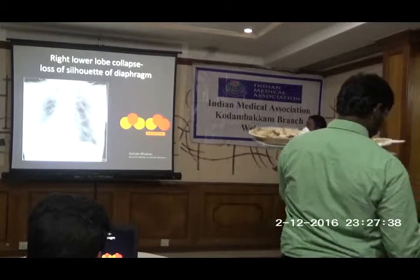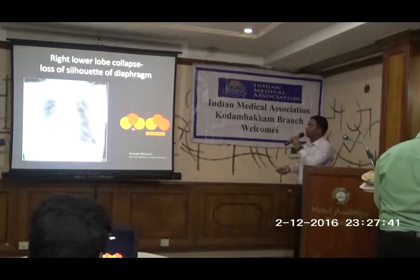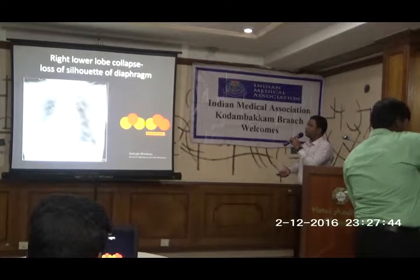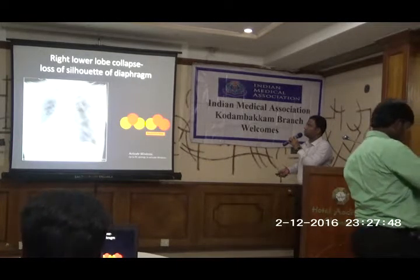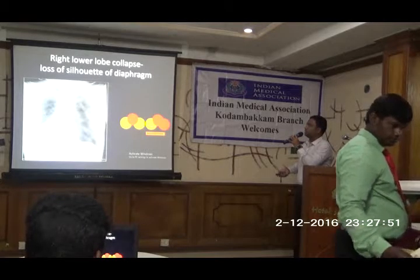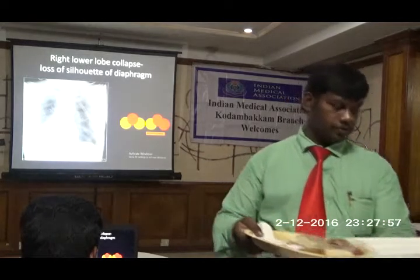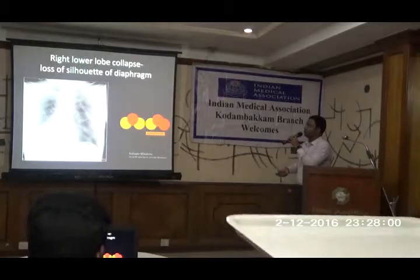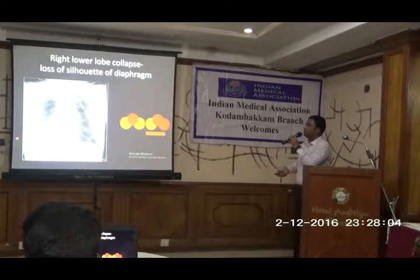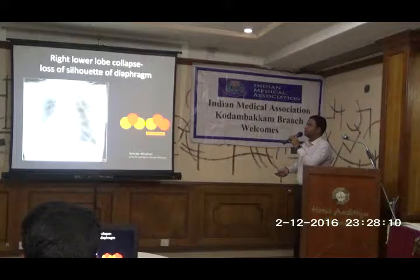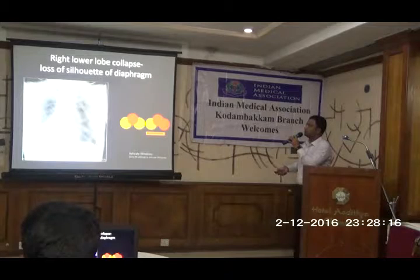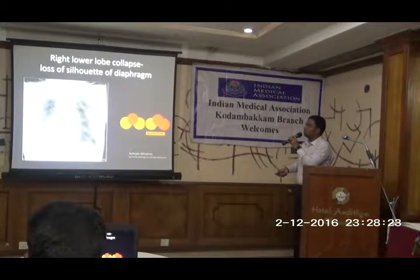Moving on to right lower lobe pathology — same silhouette sign. The right lower lobe will be in contact with the diaphragm, so we are not seeing the diaphragm. Silhouette sign is positive. We are not able to demarcate the border between the lower lobe and the diaphragm. In normal x-rays, the diaphragm should be seen up to the vertebral body level. Here the collapse has a straight margin and we are not seeing the diaphragm — this is right lower lobe collapse.